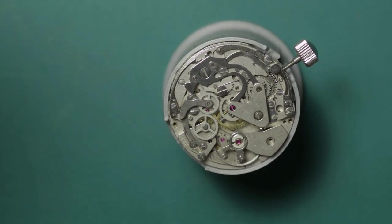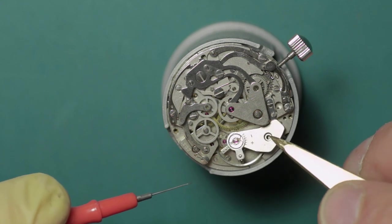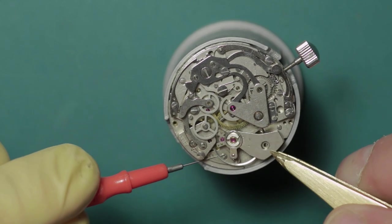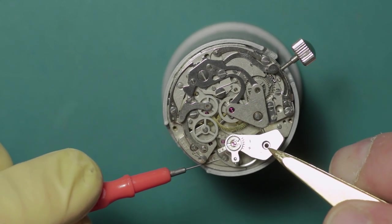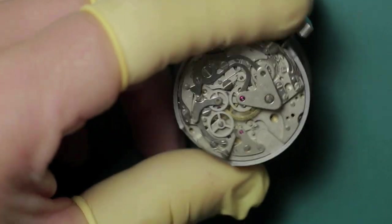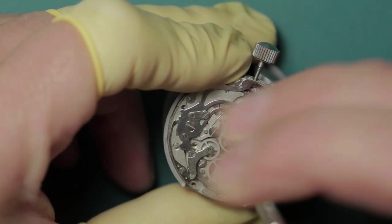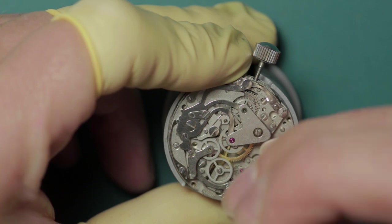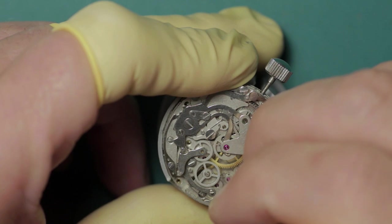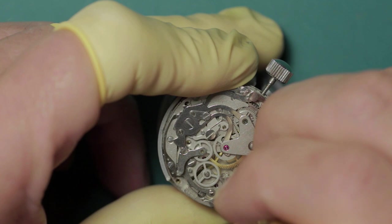Here I'm using an old oiler which I have two or three of just laying around the bench. They come in handy for all kinds of things. This is just to help wiggle the actual balance and the staff out from the plate, and it just prevents the risk of damage to the hairspring.